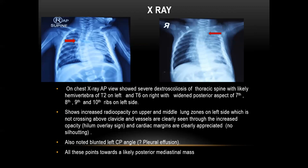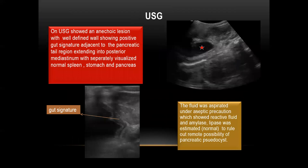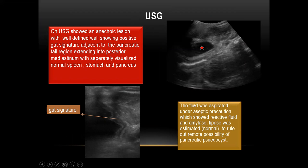All these points favor a likely posterior mediastinal mass, for which the patient underwent USG of the thorax, which showed an anechoic lesion with well-defined wall in the posterior mediastinum extending from the tail of the pancreas. However, the separately visualized spleen, stomach, and pancreas appeared normal. The wall of the lesion shows a positive gut signature. The fluid from the lesion was aspirated under aseptic precautions, which showed reactive fluid. Amylase and lipase were estimated to rule out the remote possibility of a pancreatic pseudocyst.